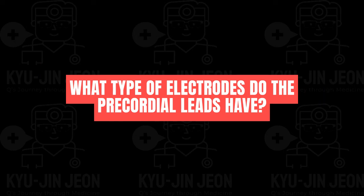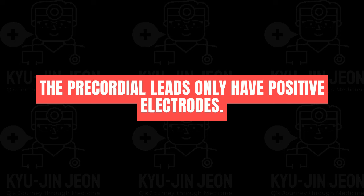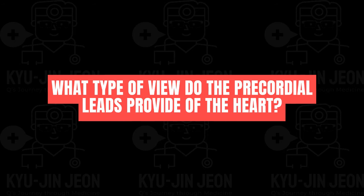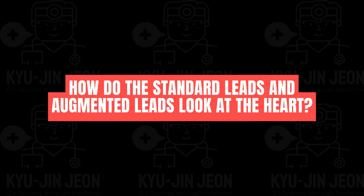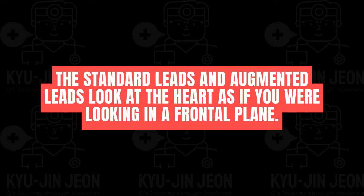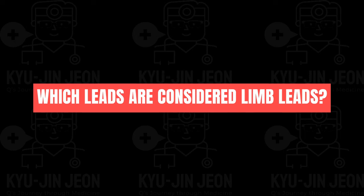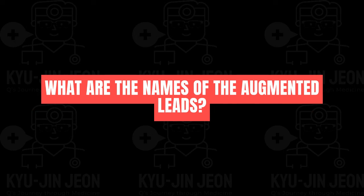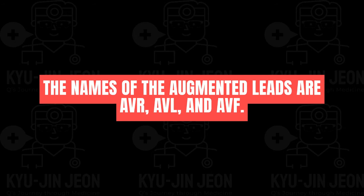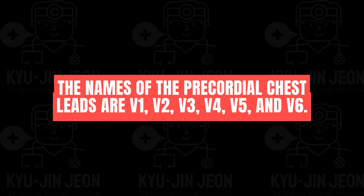The precordial leads only have positive electrodes and provide a wraparound view of the heart from the horizontal or transverse plane. The standard and augmented leads look at the heart from a frontal plane. Lead 1, 2, and 3 are considered limb leads. The augmented leads are AVR, AVL, and AVF, while the precordial chest leads are V1, V2, V3, V4, V5, and V6.